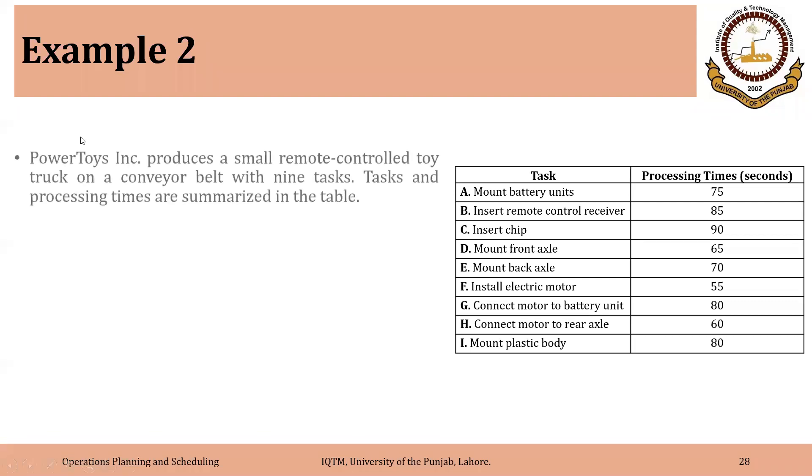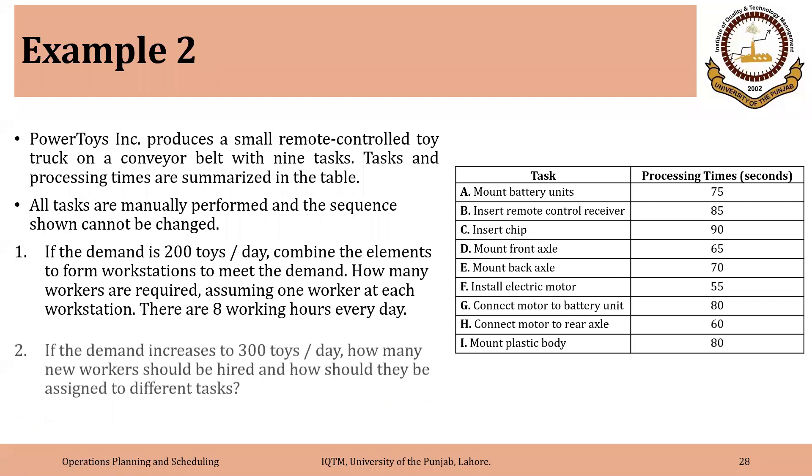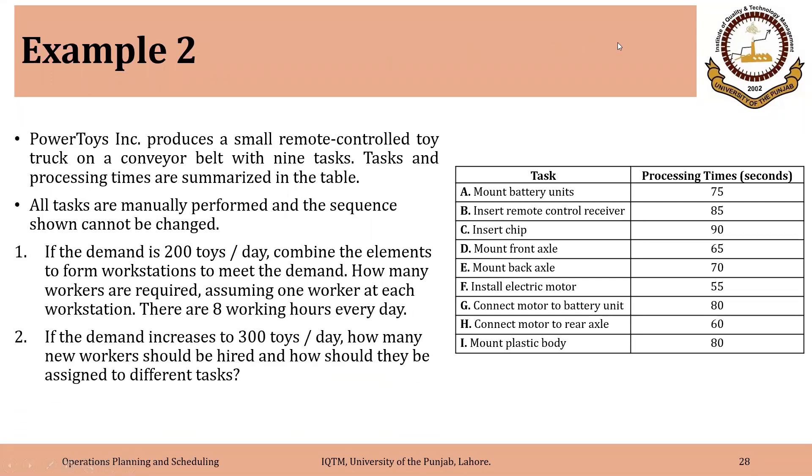Example two. PowerToys Inc. produces a small remote control toy truck on a conveyor belt with nine tasks. Tasks and processing times are summarized in the table. All tasks are manually performed and the sequence shown cannot be changed.